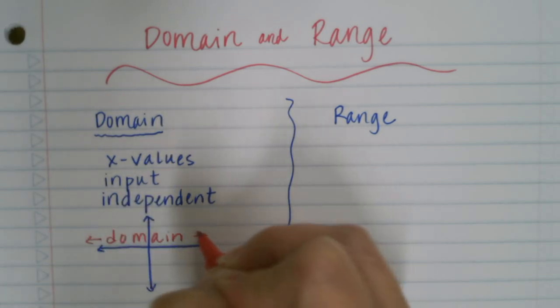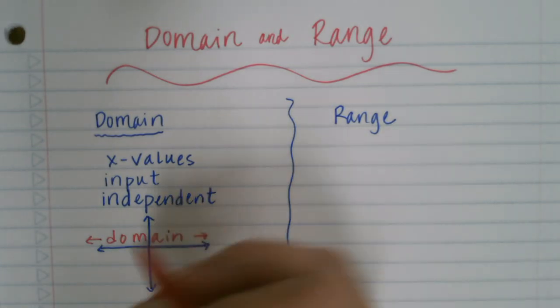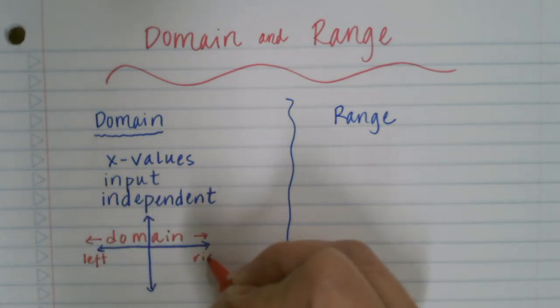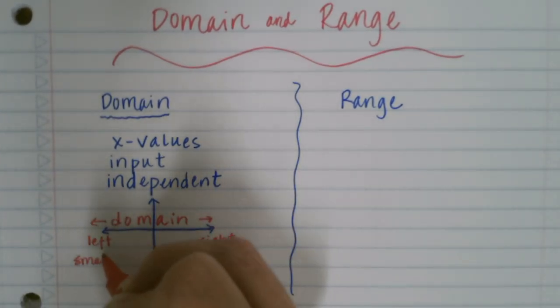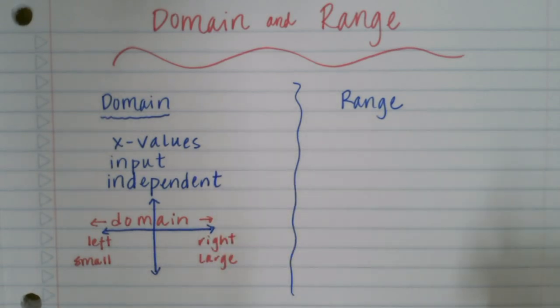What we do when we write our domain is we always go from left to right, or if you want to think of it as going from the smallest to the largest.